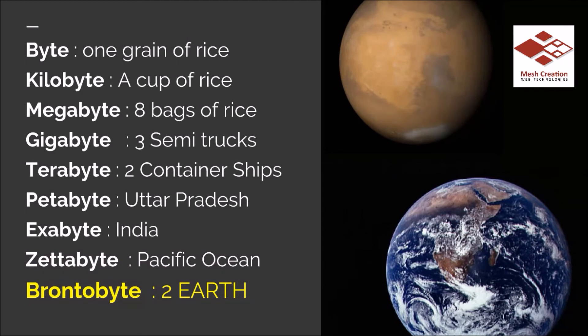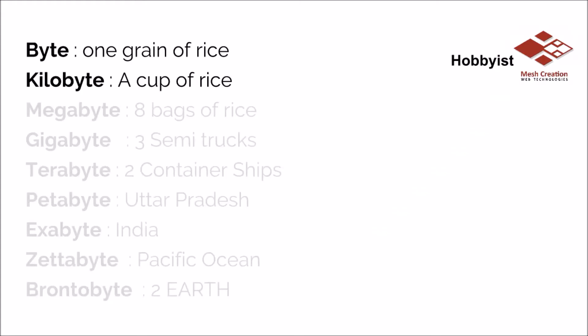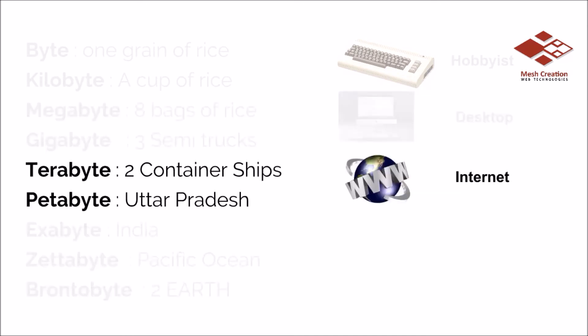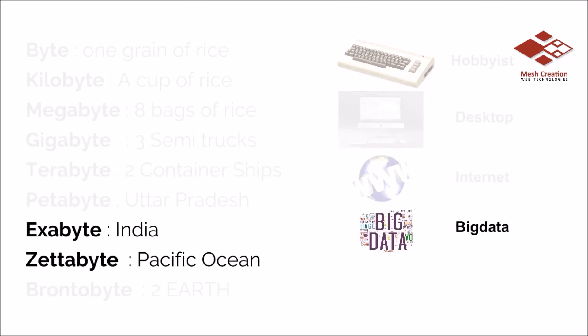Now we will look at which type of system can deal with which type of data. So let's talk about bytes and kilobytes — the hobbyist computer dealt with bytes and kilobytes. When hobbyists were talking about MBs, those systems failed. When the desktop was introduced, they were capable of storing data in MBs and GBs. After the evolution of the internet, it could deal with data in terabytes and petabytes. Data units like exabyte and zettabyte are the huge amounts that Big Data deals with.